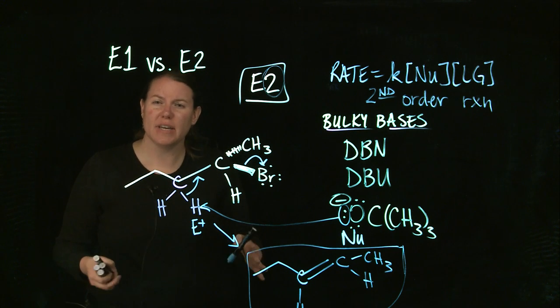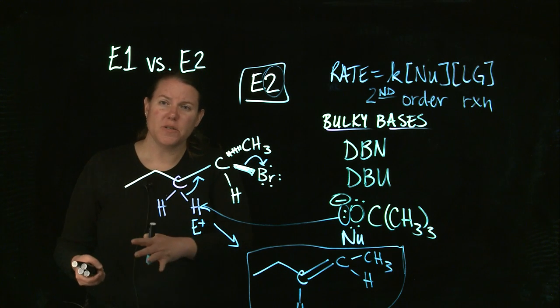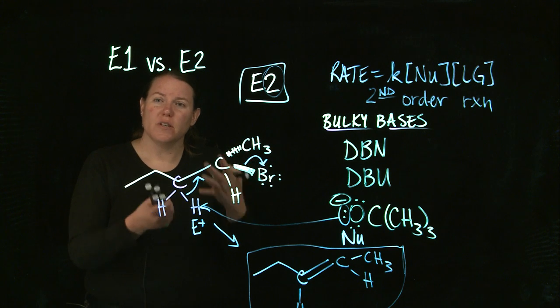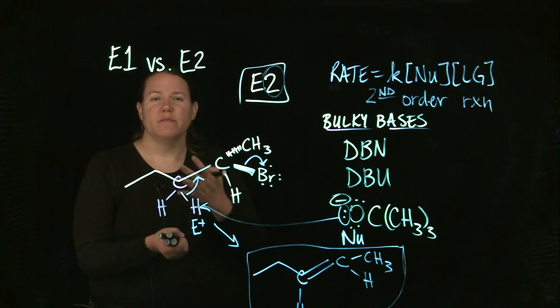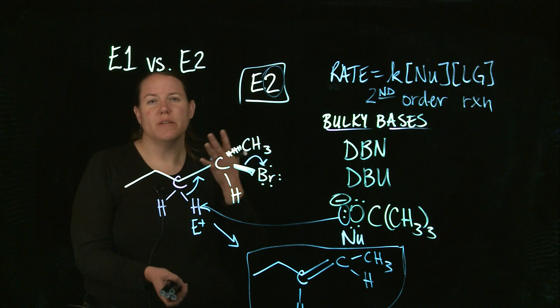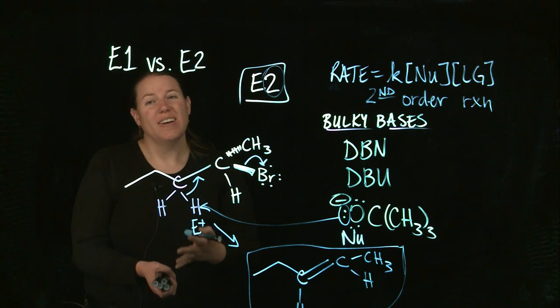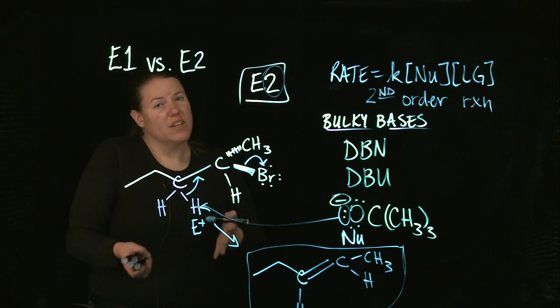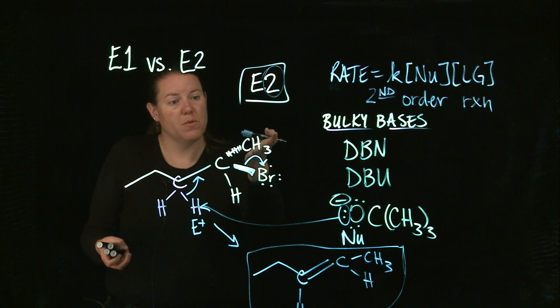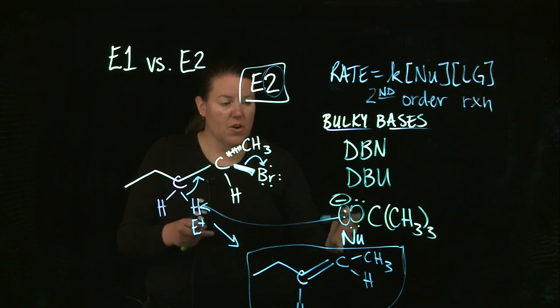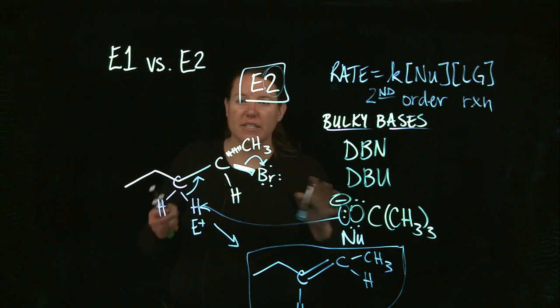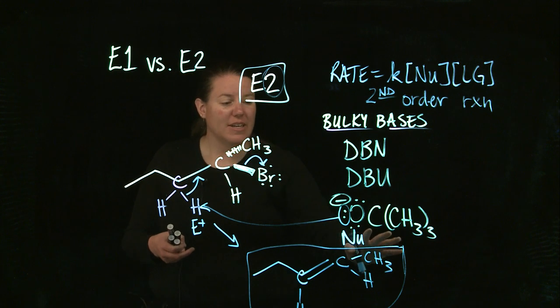In terms of the E2s, what was the difference between the E2 and the SN2? SN2, I used a strong nucleophile. I used a strong nucleophile, which meant it had a minus charge, but it wasn't big. It could slide in, even if there was something there. Here.